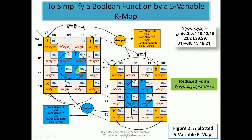We plot all min terms in the V=0 map and V=1 map, with don't care conditions at M8, M15, M18, and M21. Don't care conditions are depicted as a cross because they can be considered as either one or zero. If a don't care condition can be grouped with other min terms, it is treated as one; otherwise, if it cannot be grouped with any min terms, it is treated as zero.